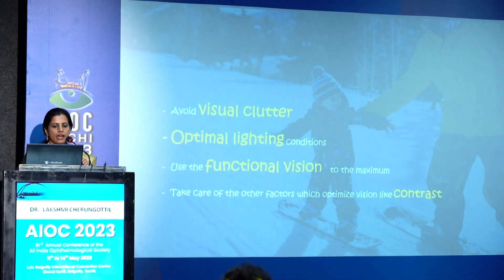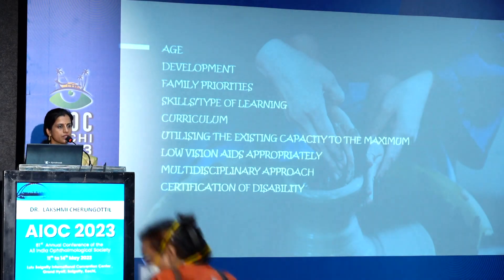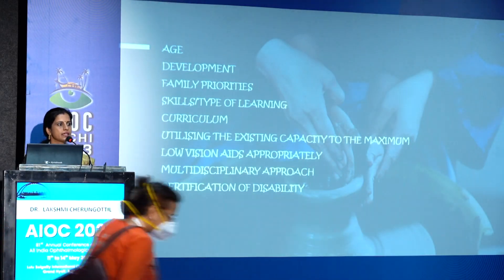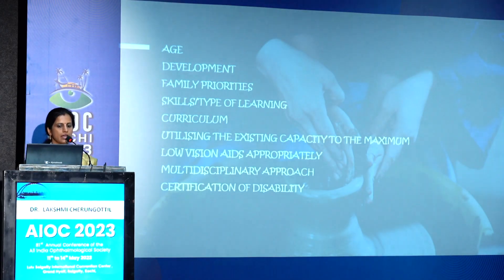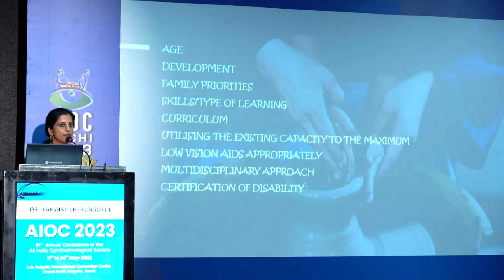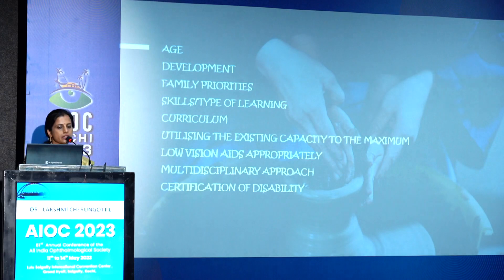We also need to consider the age of the child. For a young child, we assess the stage of development, family priorities, and what skills the child already has so we can build upon them. For an older child, we take the curriculum into account to help them learn. We need to utilize existing capacity to the maximum, introduce low vision aids appropriately where needed, and not in every situation. A multi-disciplinary approach is of utmost importance, especially for children with multiple disabilities beyond just vision.